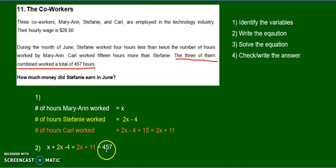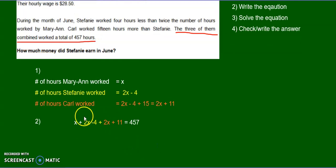And I use the different colors to show that each person, what each person makes up in the total. So this is how much Marianne is working, this is how much Stephanie worked, and this is how much Carl worked.